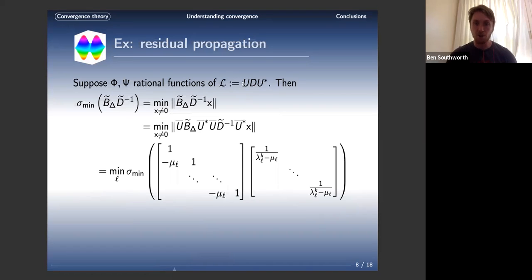All we need to do is look at the minimum singular value of this operator, and this exactly defines how parareal is going to converge. As an example, suppose that we have the simplest case of parareal and MGRIT, the standard case where phi and z are rational functions of a spatial operator. The spatial operator is SPD or normal, so it has a unitary diagonalization UDU star, where UU star is the identity.